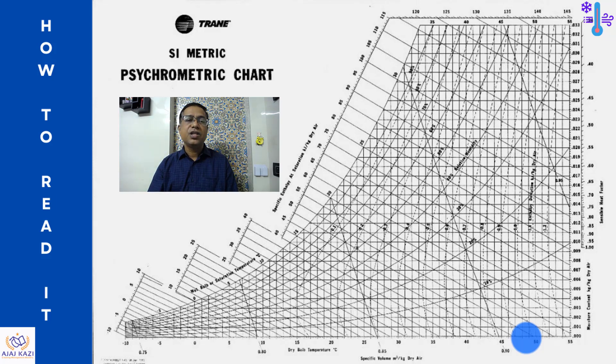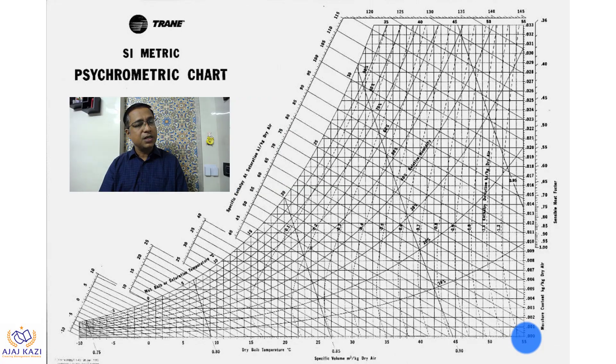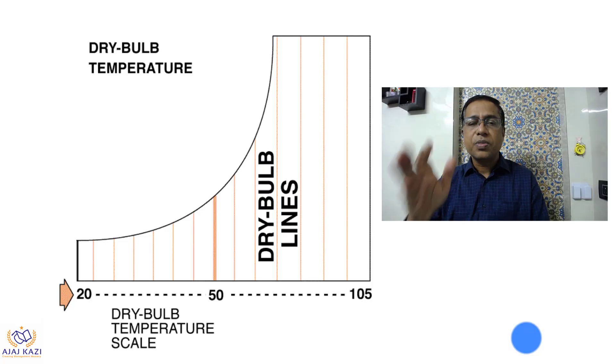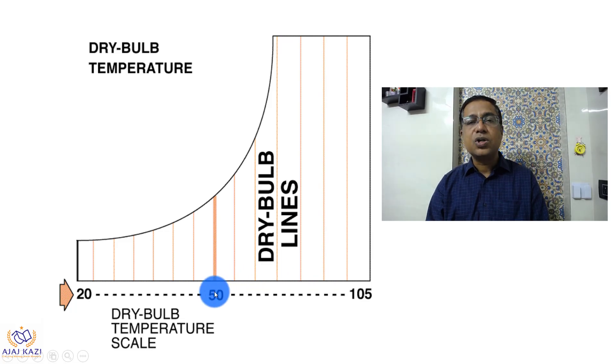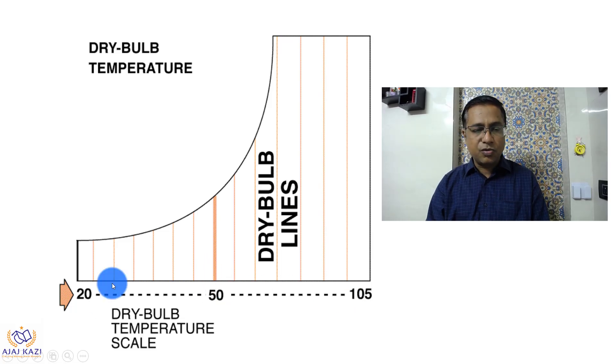It is used for designing HVAC systems and various other systems. Let us look at how we can read it. The vertical lines in this chart and the values on the x-axis denote the dry bulb temperature. This is the dry bulb temperature scale: 20, 50. Where the vertical lines hit the horizontal axis are the data points for dry bulb temperatures.